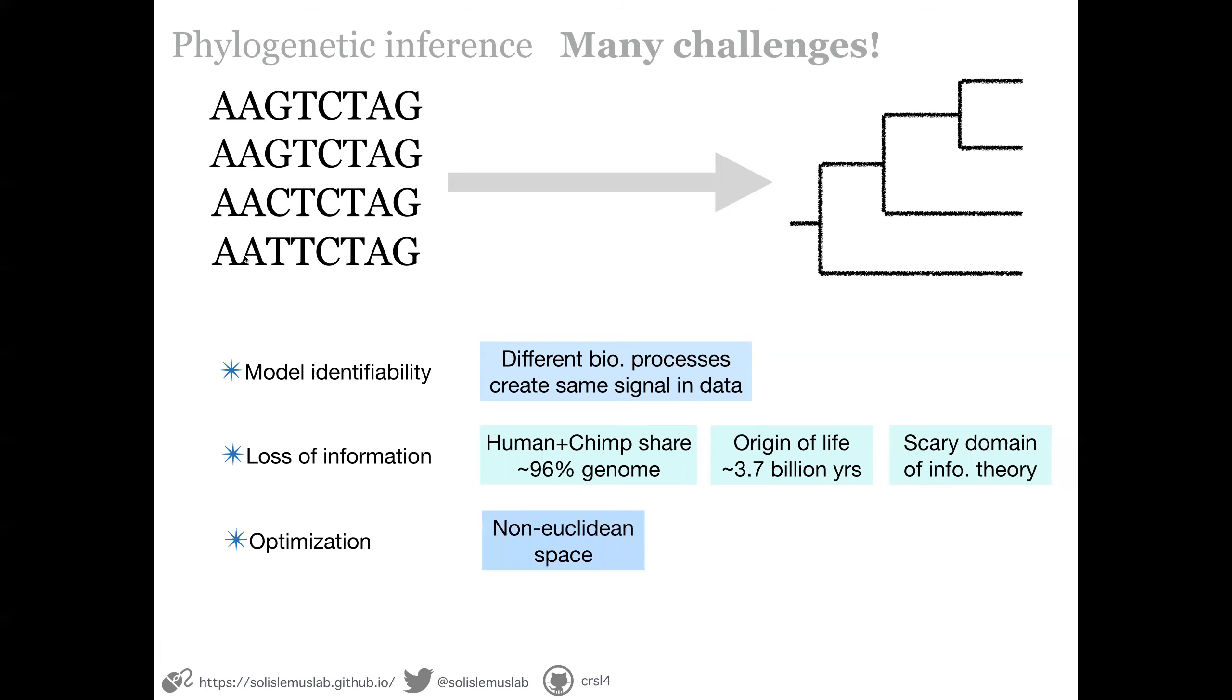And also there are challenges in optimization because this is a non-Euclidean space. Because the tree is a discrete object, we have to search heuristically, the space of trees to find the one that maximizes the likelihood.